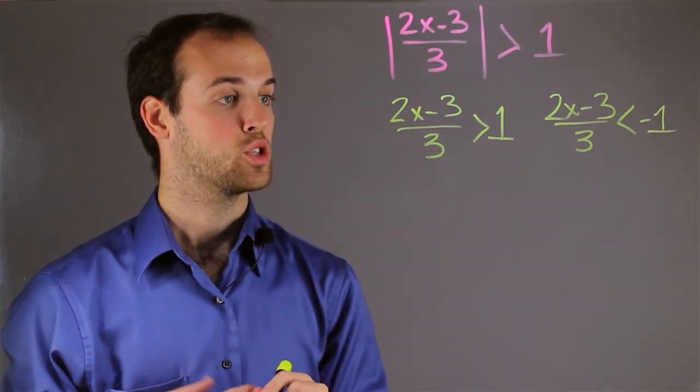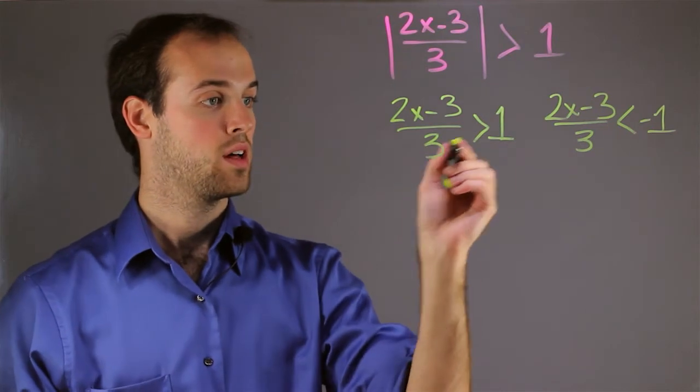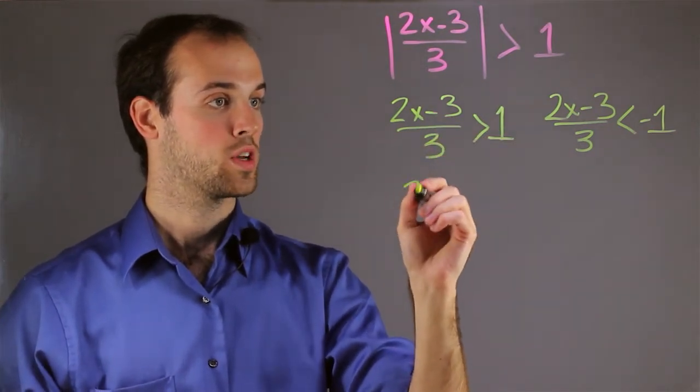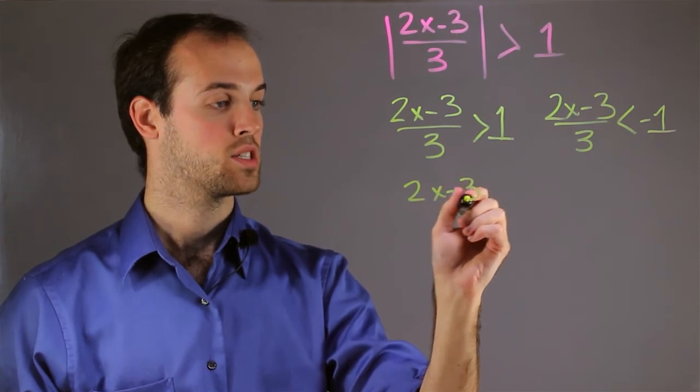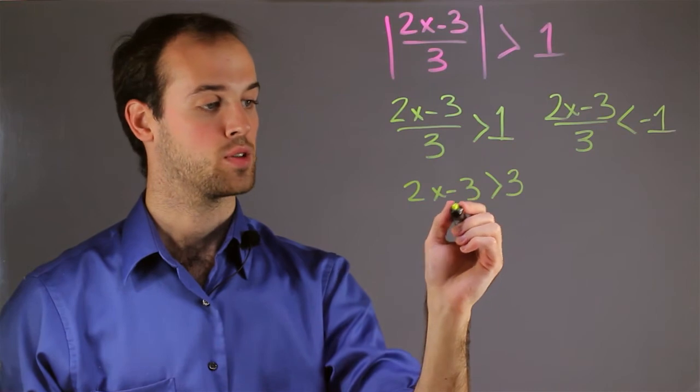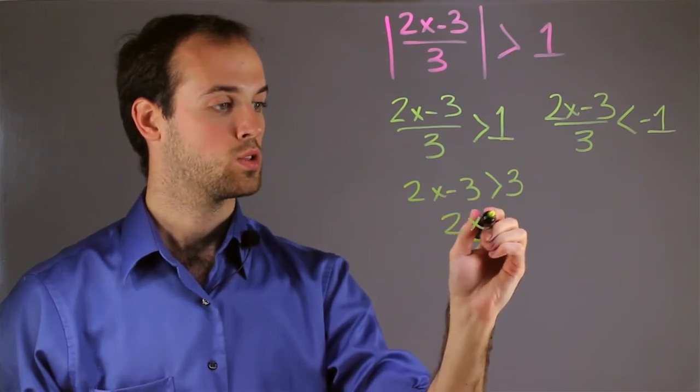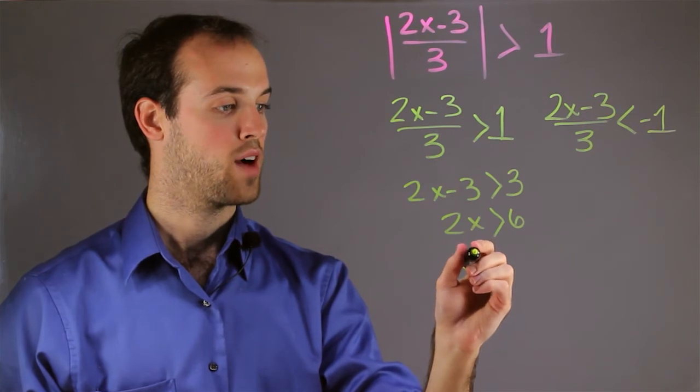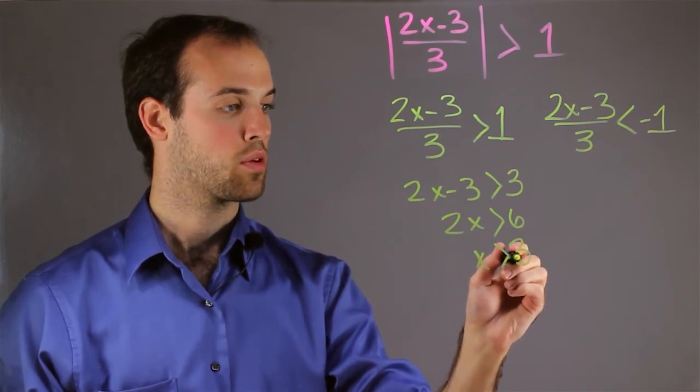So now I would just simply solve the equation. I have a 3, I'm going to multiply by 3 on both sides, which will give me 2x minus 3 is greater than 3. And then I want to add 3 to both sides, which will give me 2x is greater than 6. And then I want to divide by 2, which will give me x is greater than 3.